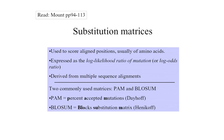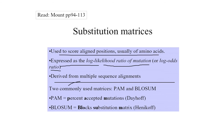Substitution matrices are used to score aligned positions — usually of amino acids, not nucleotides. They are expressed as the log likelihood ratio of mutations, or log odds ratio, and are derived from multiple sequence alignments (MSA). There are two commonly used matrix types under substitution matrices — this is where we discuss PAM and BLOSUM.